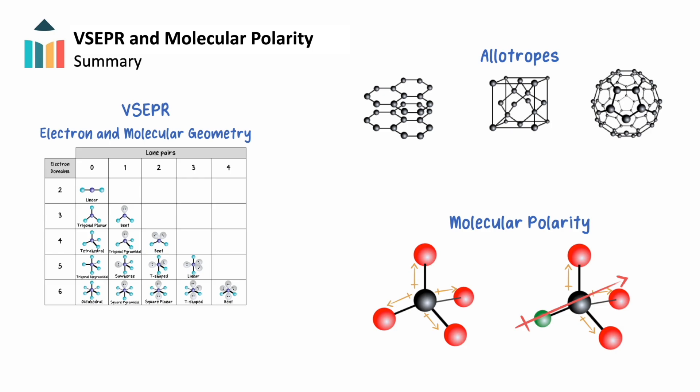In summary, the repulsion between bonded and non-bonded valence electrons in covalent structures causes the molecules to take shapes known as their electron and molecular geometry. Different varieties of shapes within the same element create allotropes. Within bonds of these molecules, electrons can be pulled toward one atom more than another, creating bond dipoles. If there is a high amount of symmetry in the force and direction of these bond dipoles, they can cancel each other out. If not, they add together in one direction, creating polar molecules with an overall dipole moment. Learning about the geometry and polarity of covalent compounds is vital to understanding the chemical behavior of covalent molecules and the intermolecular forces that attract them to each other.